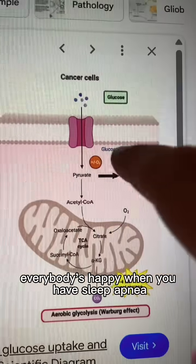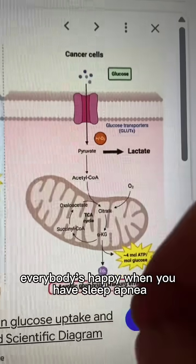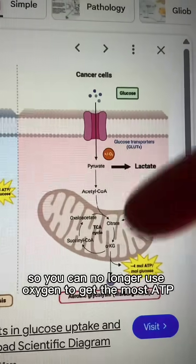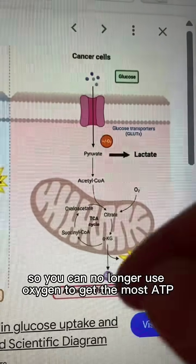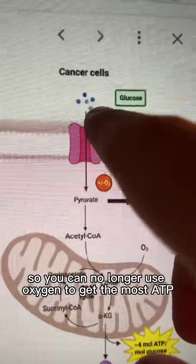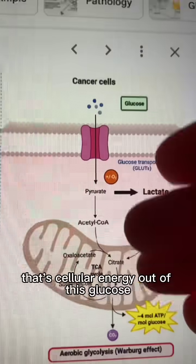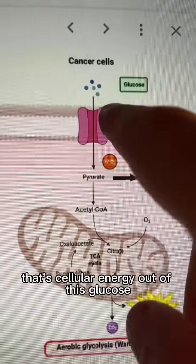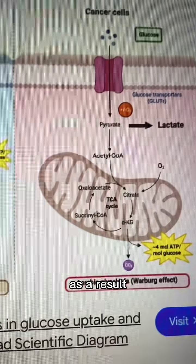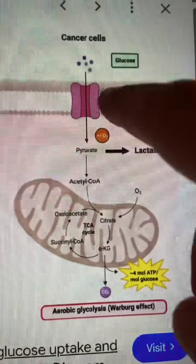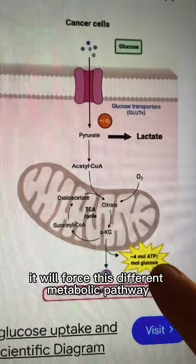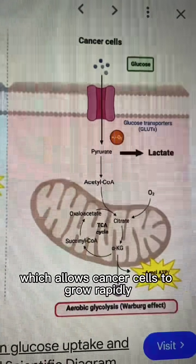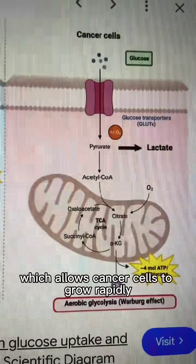When you have sleep apnea, oxygen levels drop, so you can no longer use oxygen to get the most ATP — that's cellular energy — out of glucose. As a result, it forces a different metabolic pathway which allows cancer cells to grow rapidly.